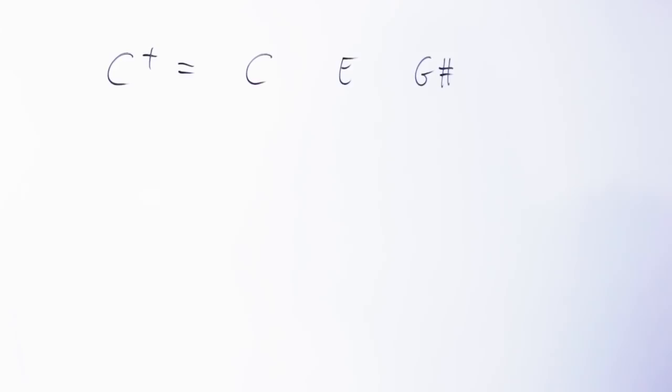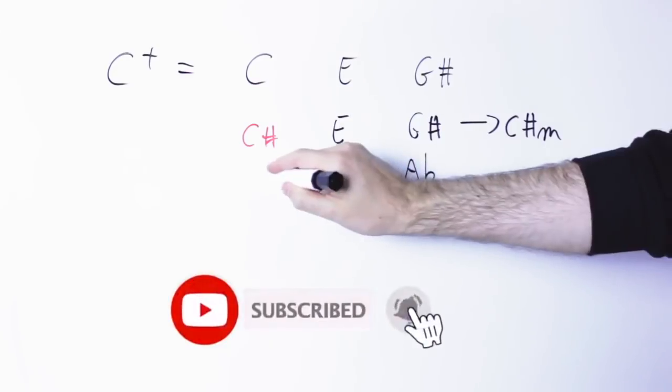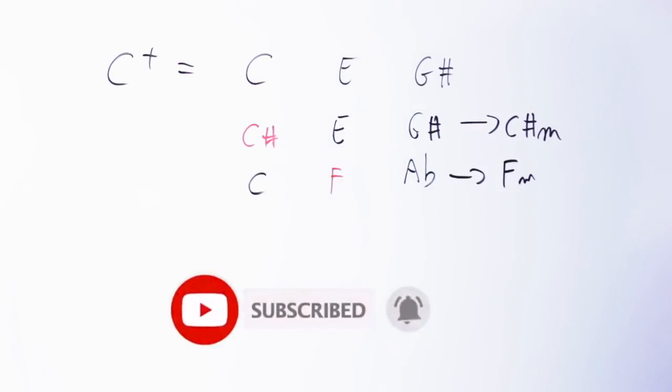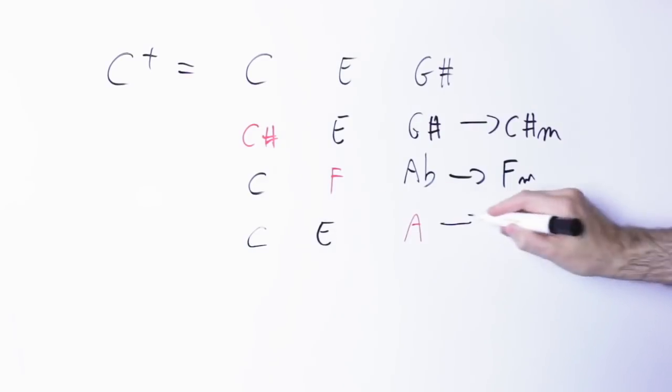Now if I take the very same augmented chord and instead I raise one note by a half step, I get a minor chord. So if I take the C and raise it to C sharp, I get a C sharp minor chord, C sharp, E, G sharp. If I take the E note and I raise it a half step, I get an F minor chord. And if I take the G sharp note and raise it a half step, I get an A minor chord.